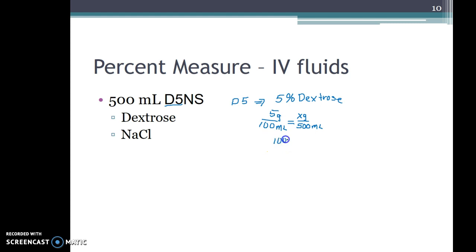So 100x equals 2,500. Divide both sides by 100 and we get x is 25 grams of dextrose.